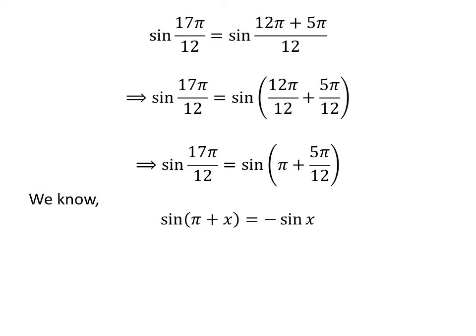We know the trigonometry identity: sine of pi plus x is equal to minus sine of x. The proof of this identity is explained in the video appearing in the upper right corner, and the link is also given in the description. Applying this identity gives us sine of 17 times pi upon 12 is equal to minus sine of 5 times pi upon 12.